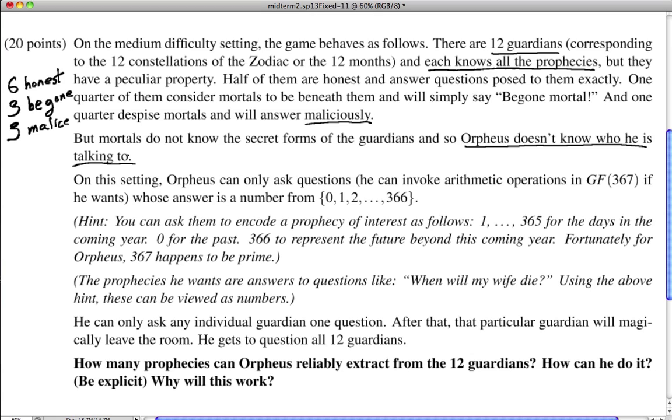So furthermore, the question says he can only ask questions whose answer is a number. And so now we are faced with a challenge. We're wondering, well, he wants to know our dates. And he can only ask questions whose answer is a number. So that's where this hint comes in. The hint says, you can ask them to encode a prophecy of interest as follows. One to 365 for the days in the coming year. Zero for the past. 366 represent the future. And great.